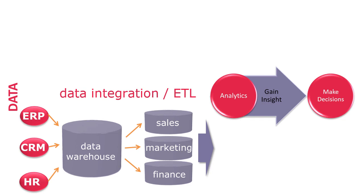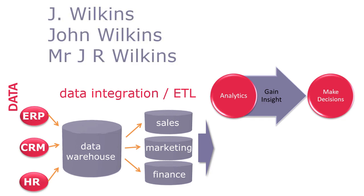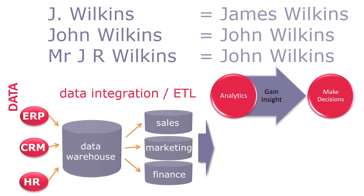Transformation is a key step for a number of reasons. For example, data is likely to be stored in different formats, certainly across applications, but sometimes even within an application. Take for example these names — are these the same person or different? Data needs to be conformed; in other words, a schema needs to be decided upfront, and data modified to conform with that schema.